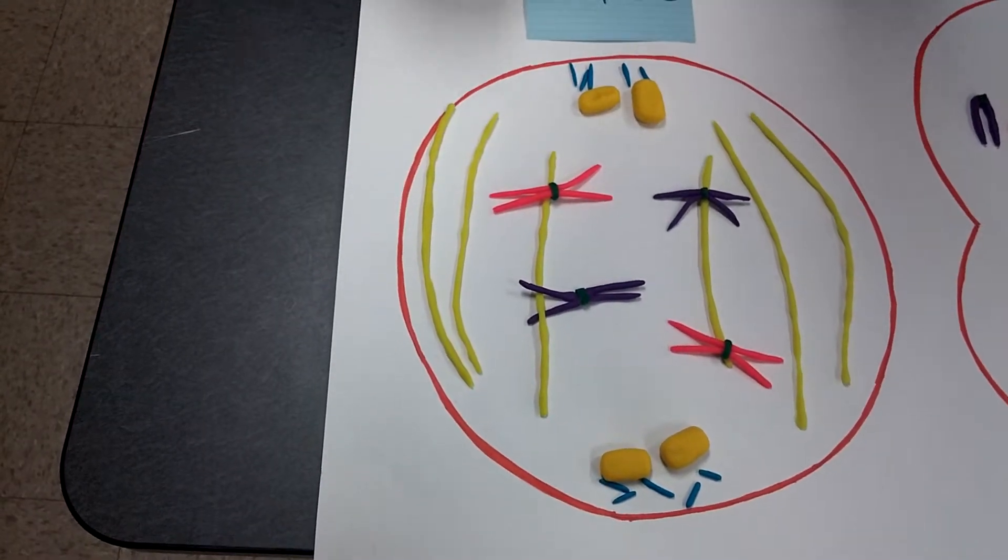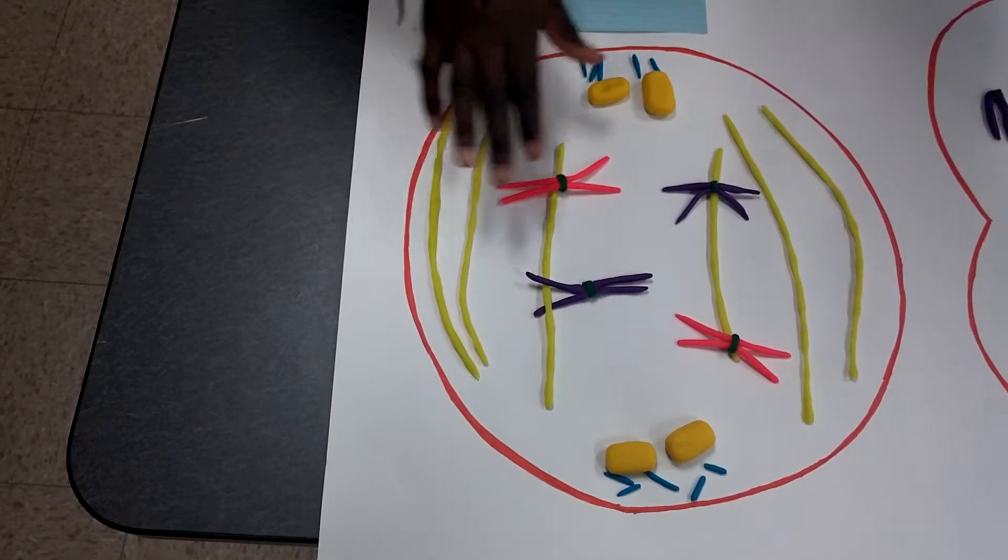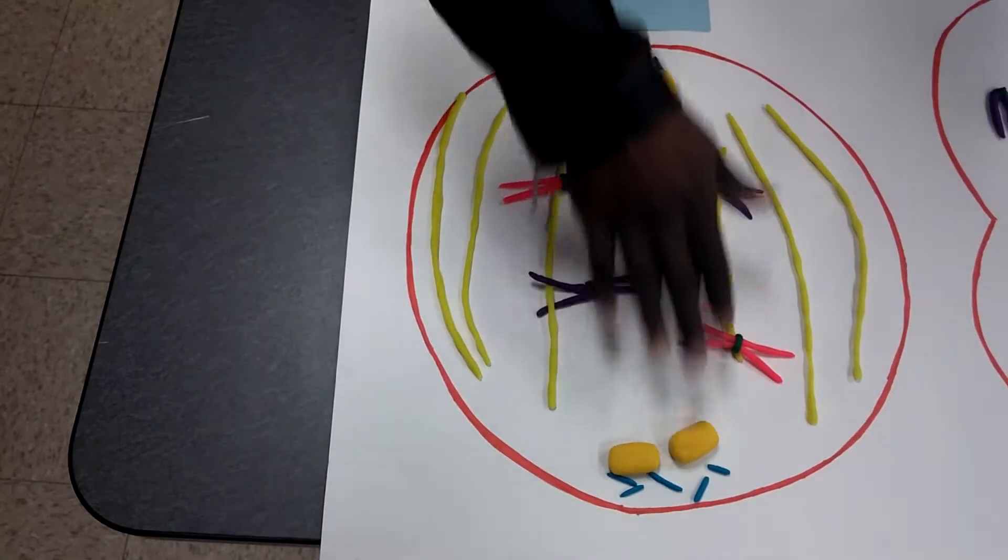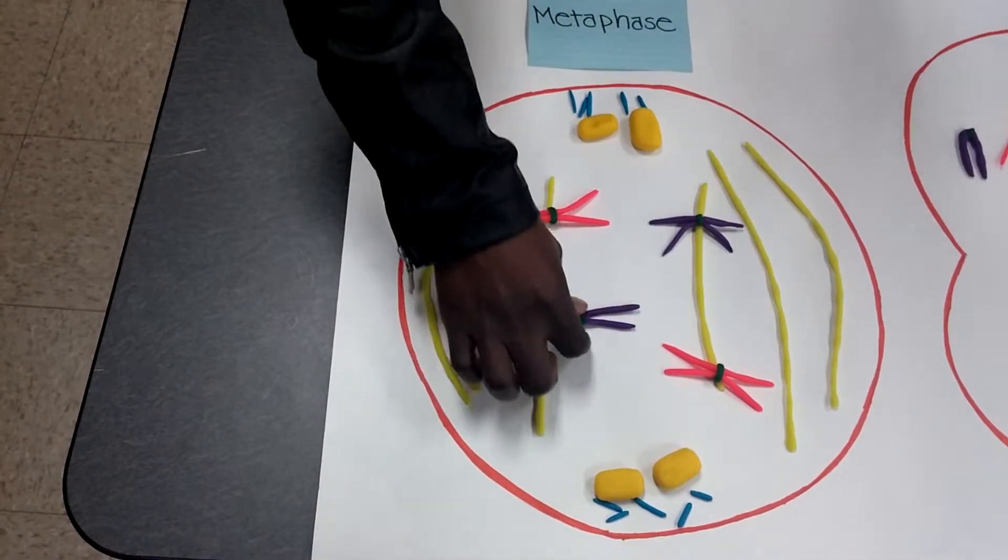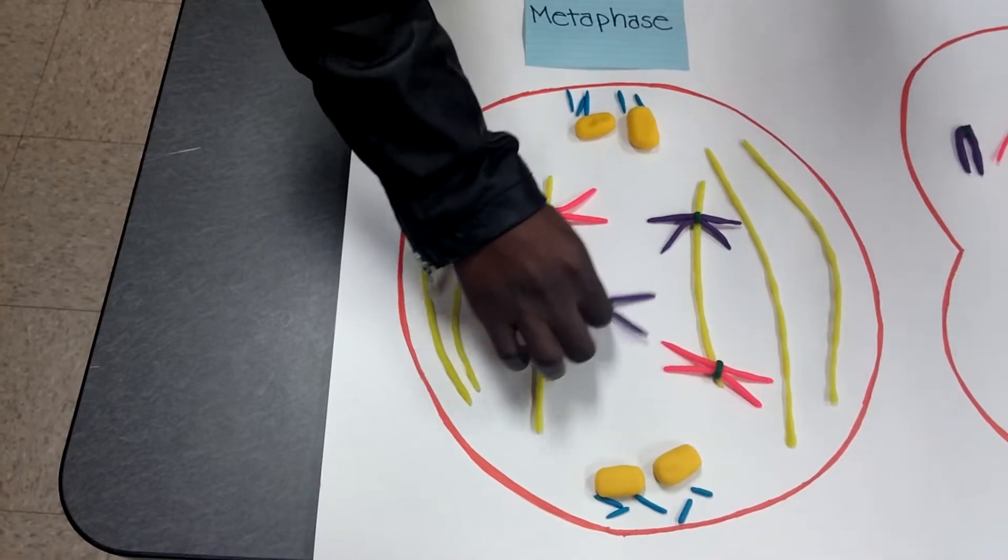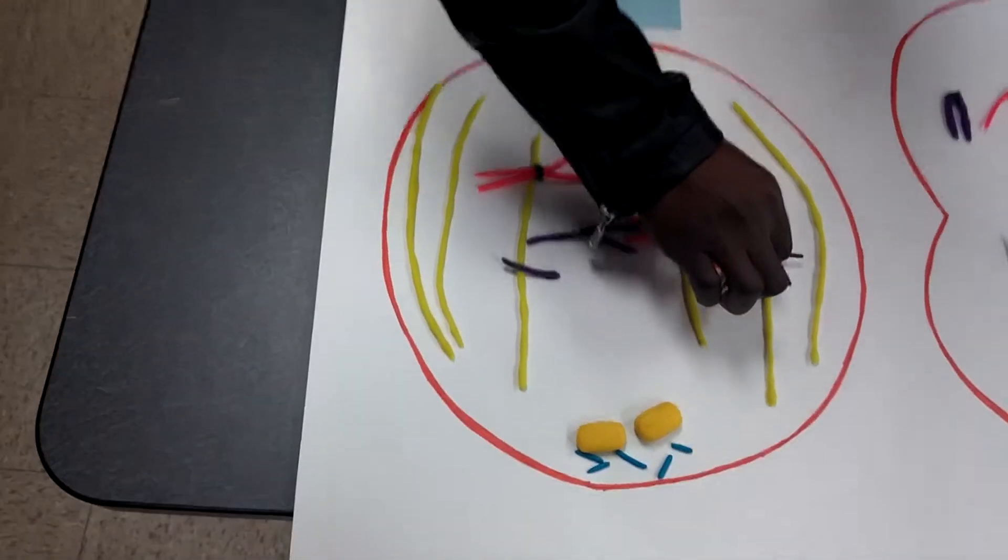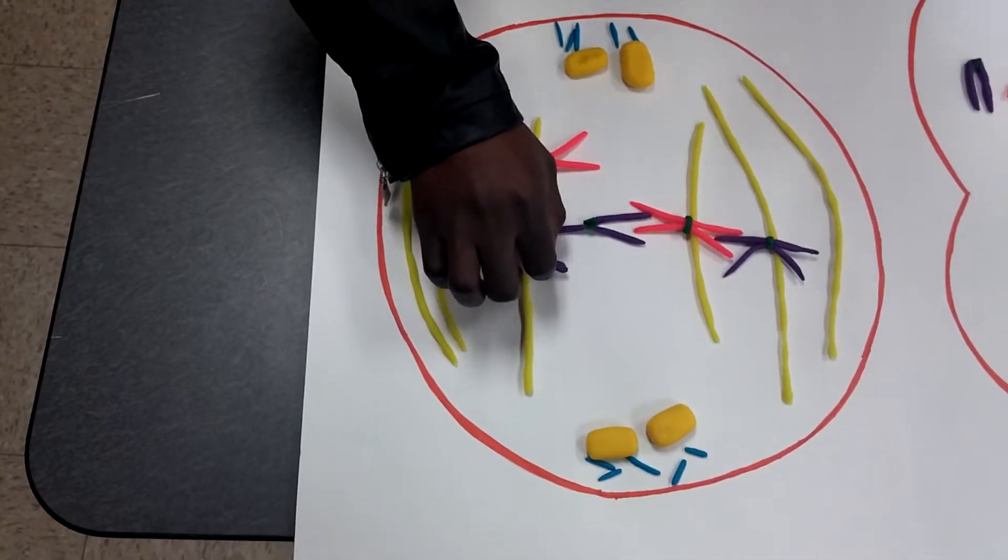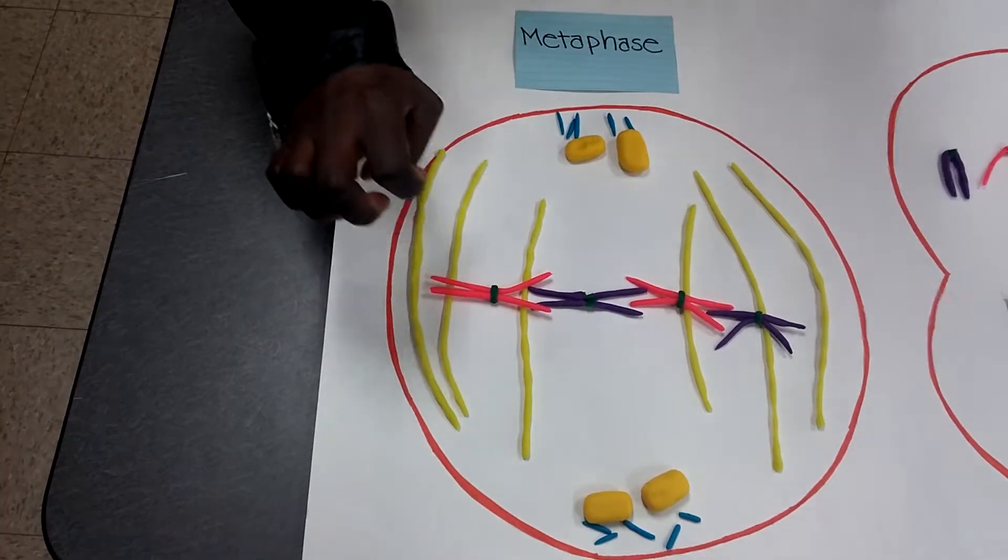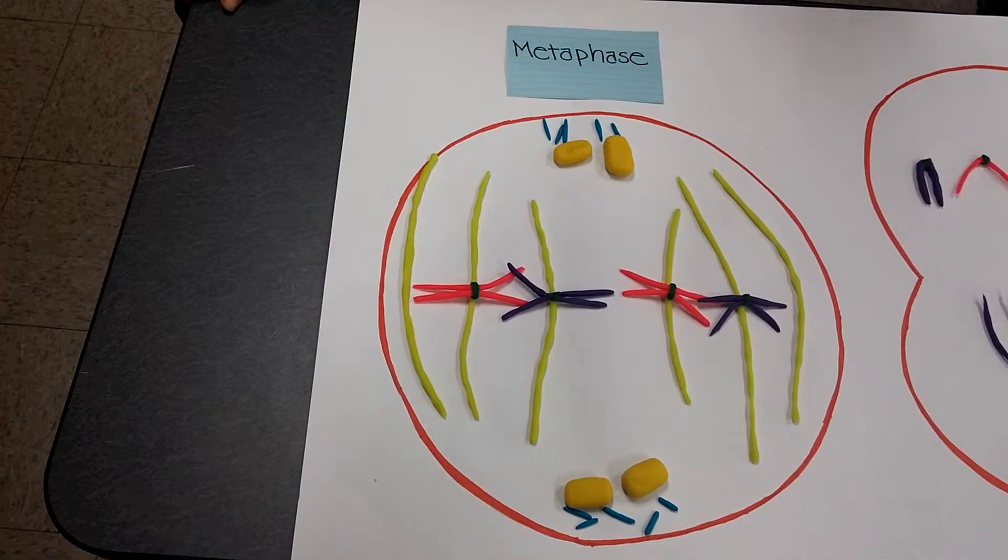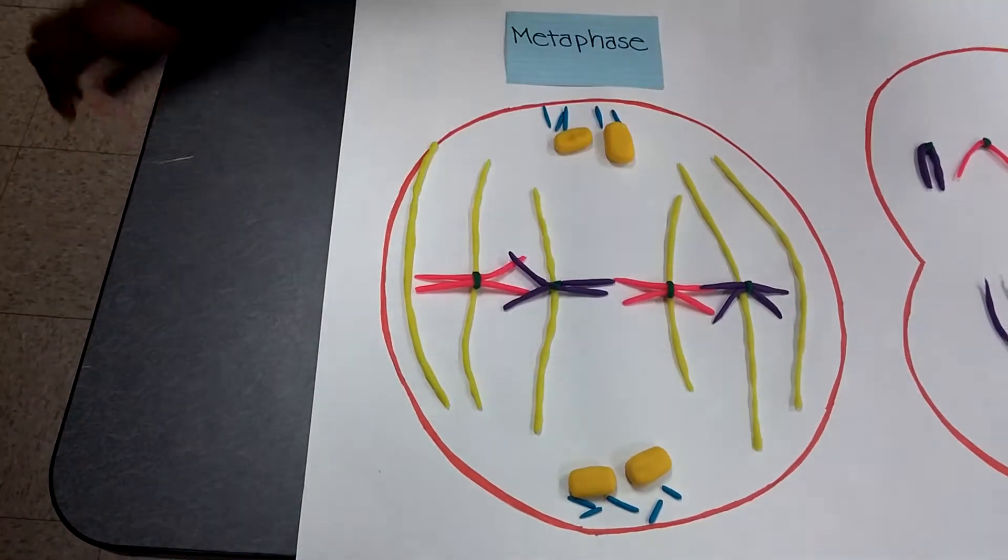In metaphase, which is the second stage of mitosis, the two centrosomes are at opposite sides of the cell where the chromosomes now begin to align in the middle of the equator. The midline where the chromosomes align is called the metaphase plate.